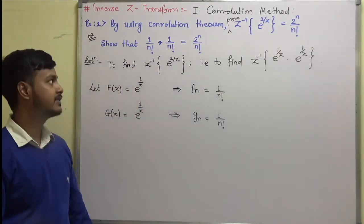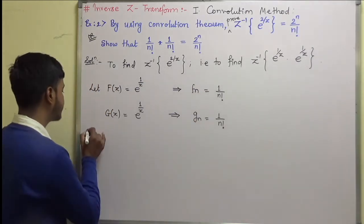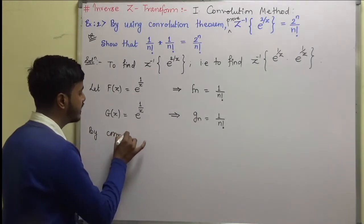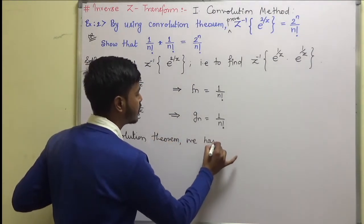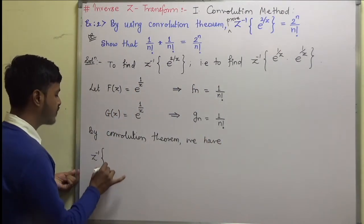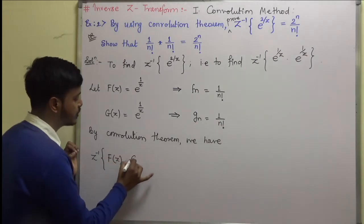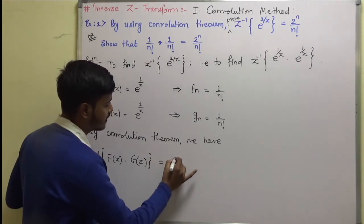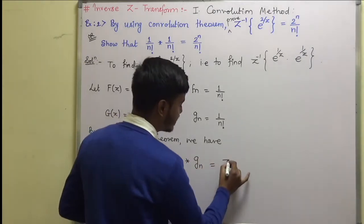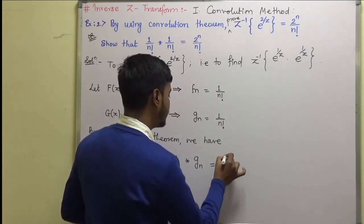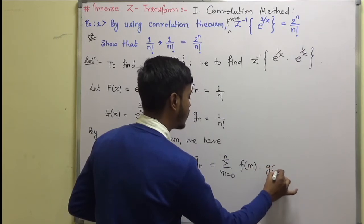Either you remember or take help from the given problem. So f(n) = 1/n! and g(n) = 1/n!. Now make use of the convolution theorem. By the convolution theorem, z-inverse of f(z)·g(z) equals f(n) convolution g(n), which is the same as the summation from m = 0 to n of f(m) into g(n − m).